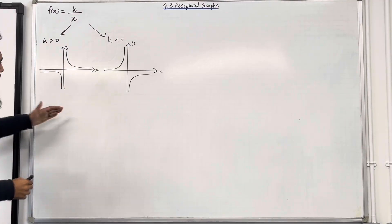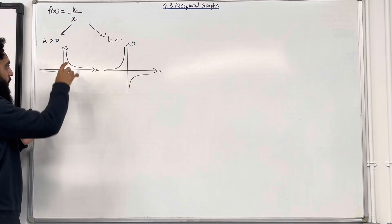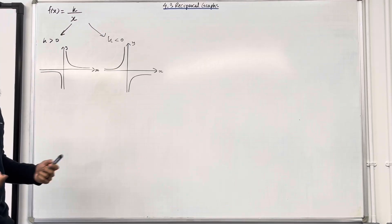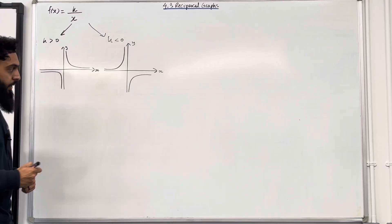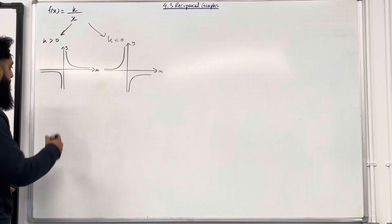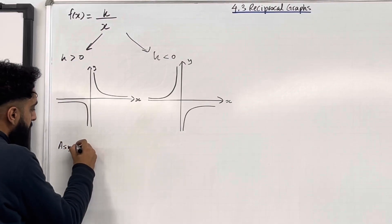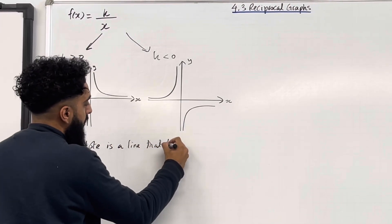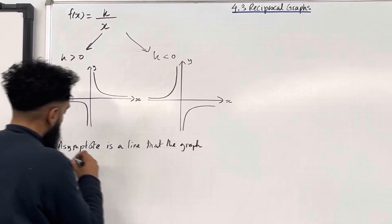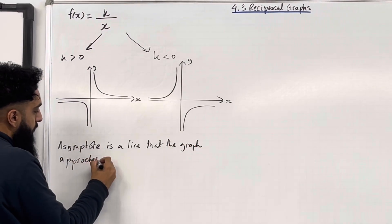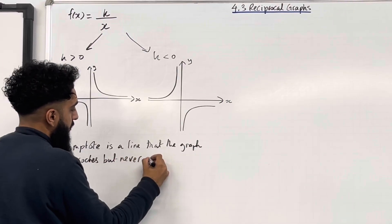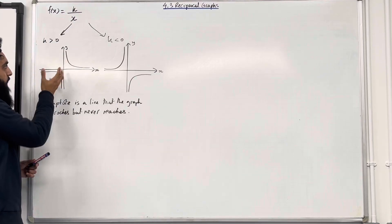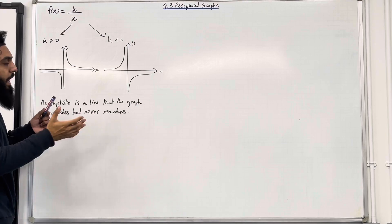Notice that the y and the x axis in both cases represent lines that the graph approaches but never reaches. These two lines have special names — it is called the asymptote. An asymptote is a line that the graph approaches but never reaches. That is the formal definition.